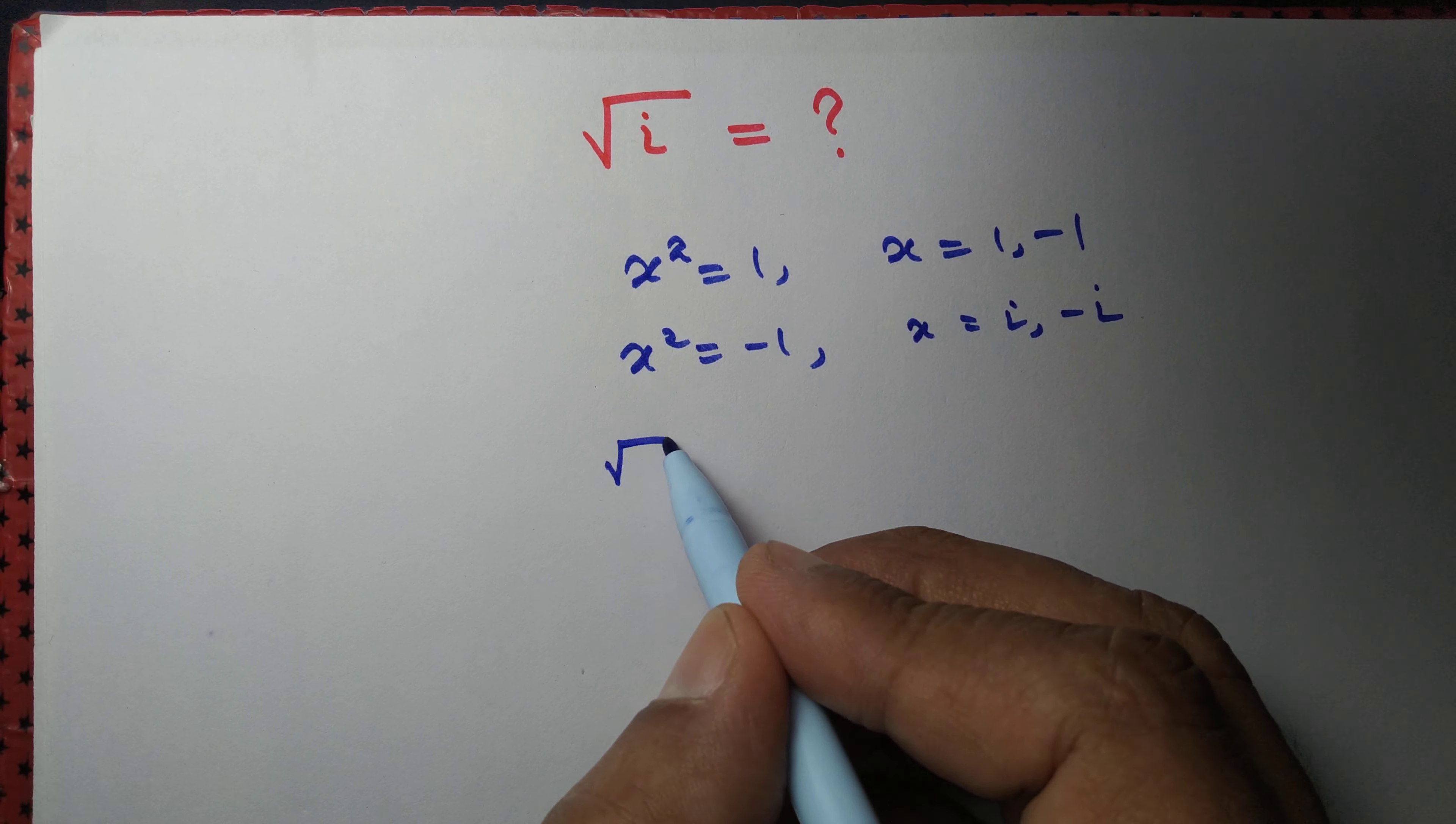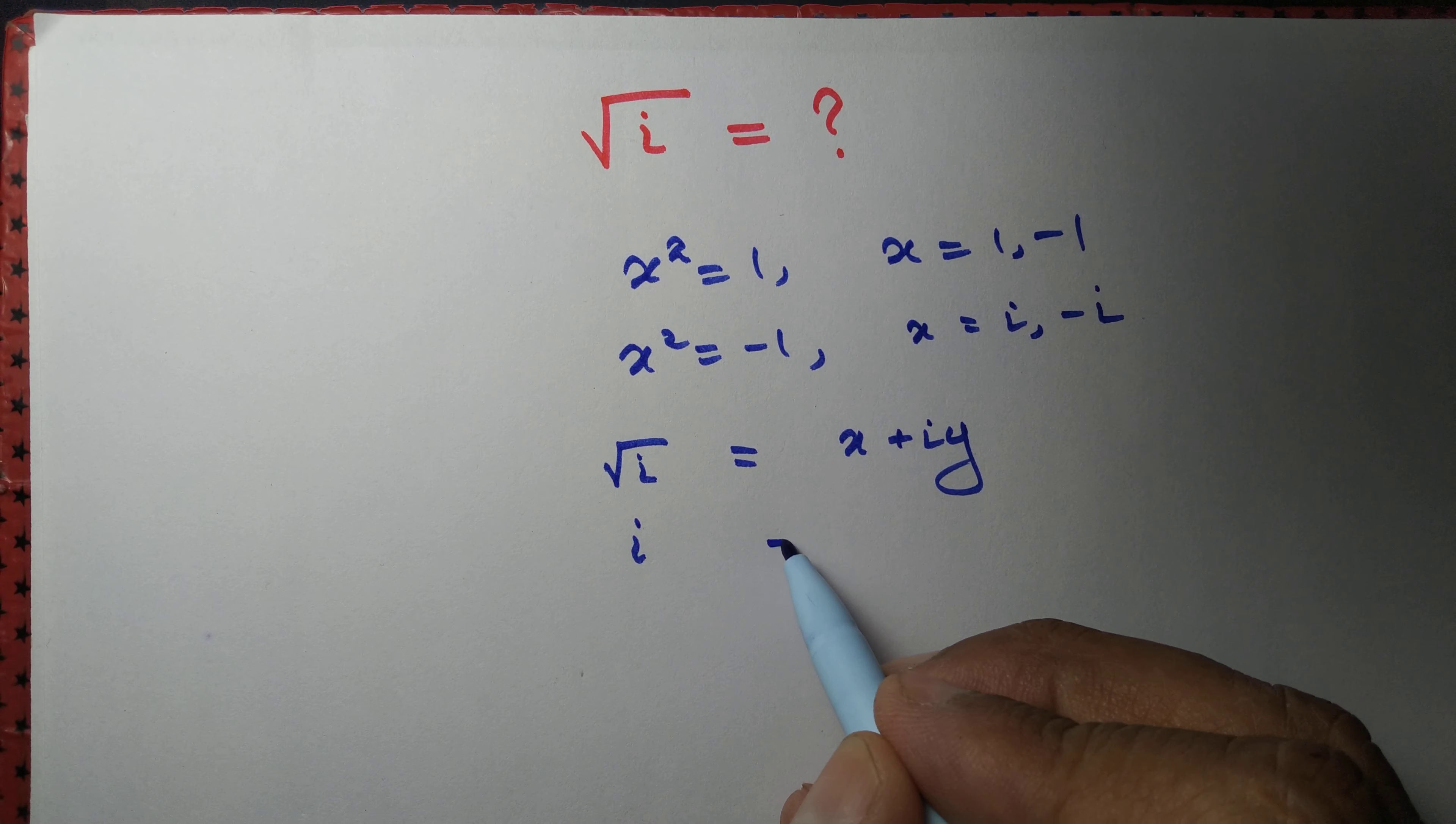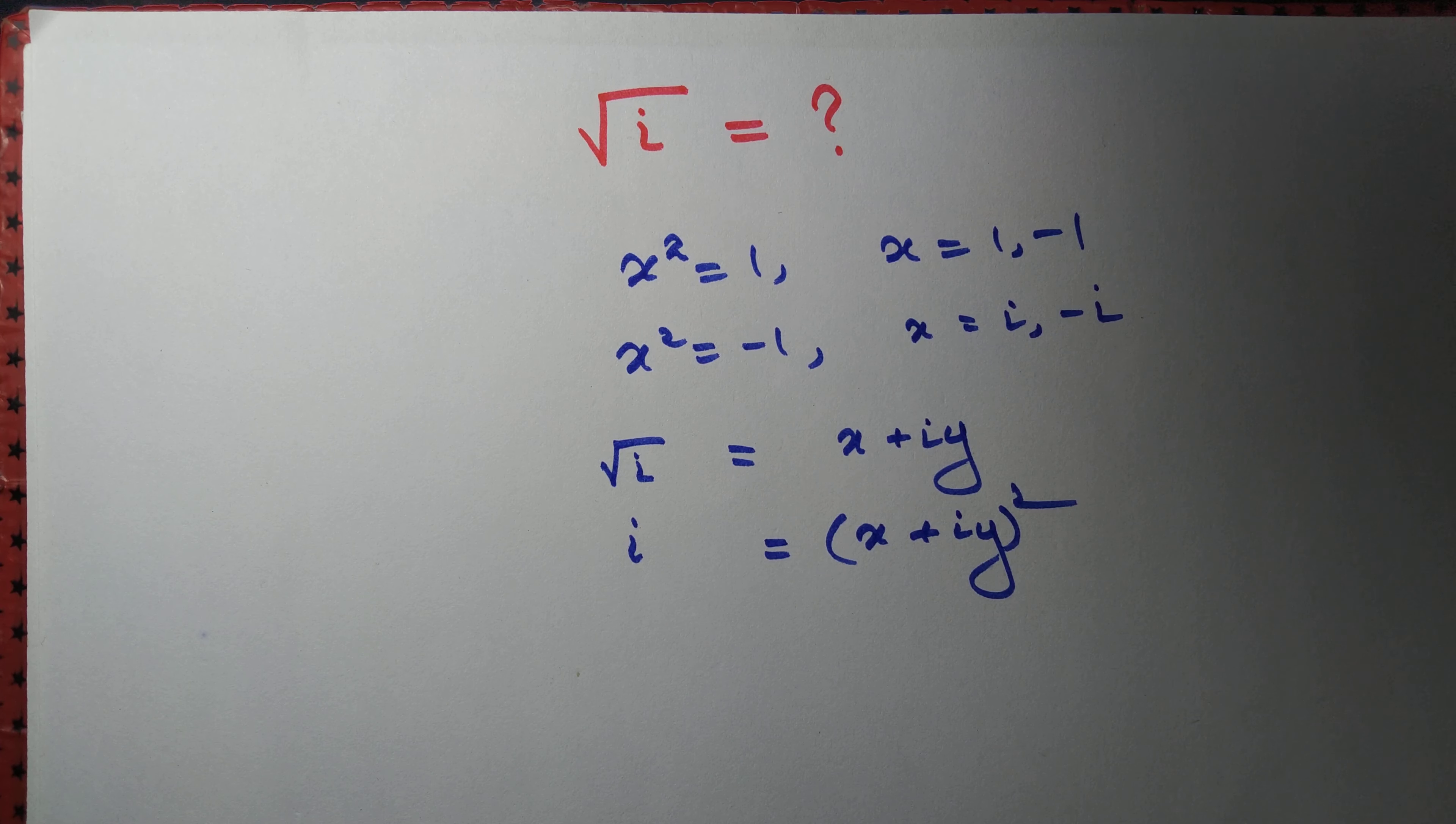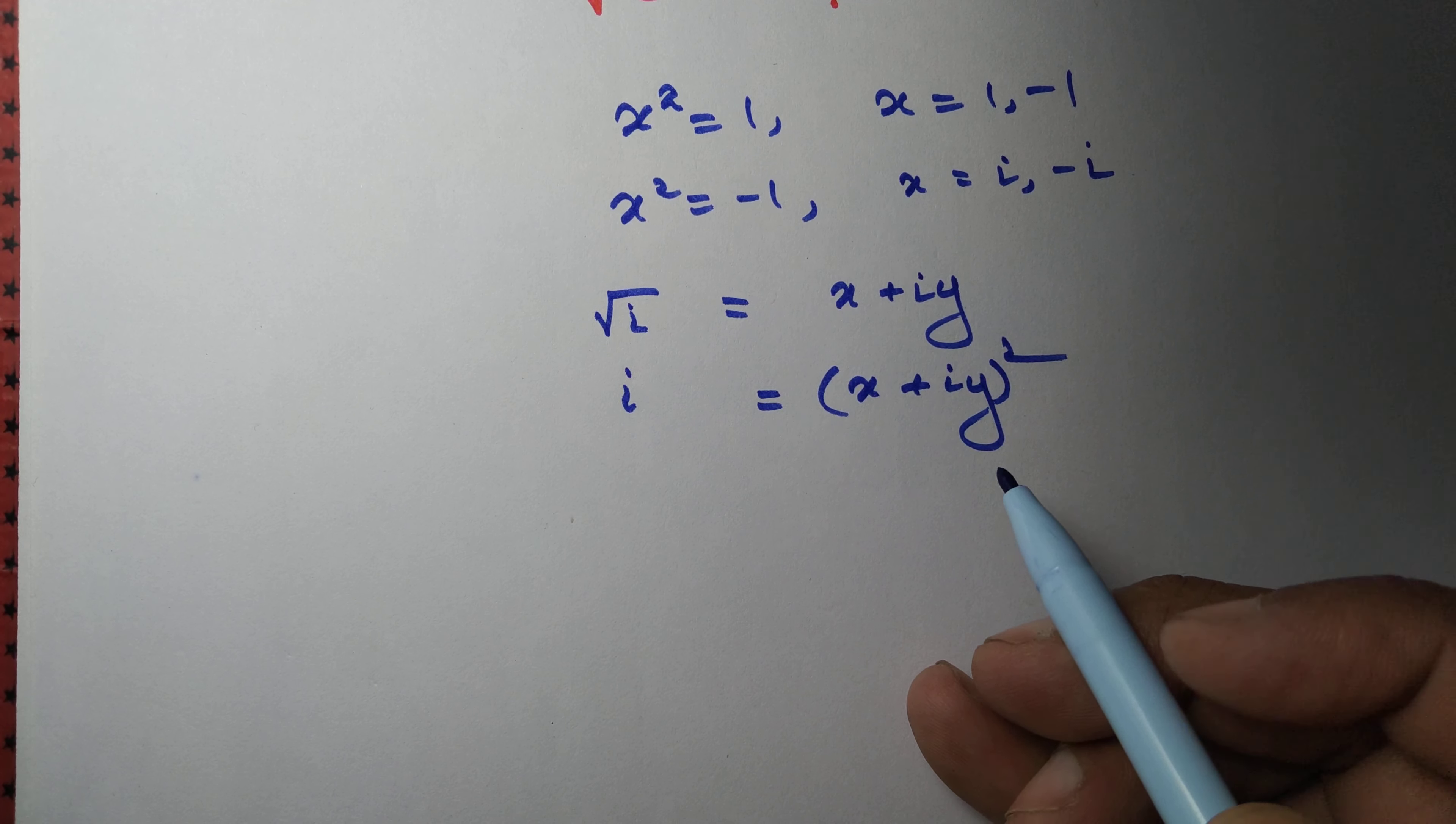What about the equation square root of i equals x plus iy? In other words, we solve the equation i equals x plus iy whole thing squared. Can we solve it? Yes, of course. Here we assume x and y to be real numbers.